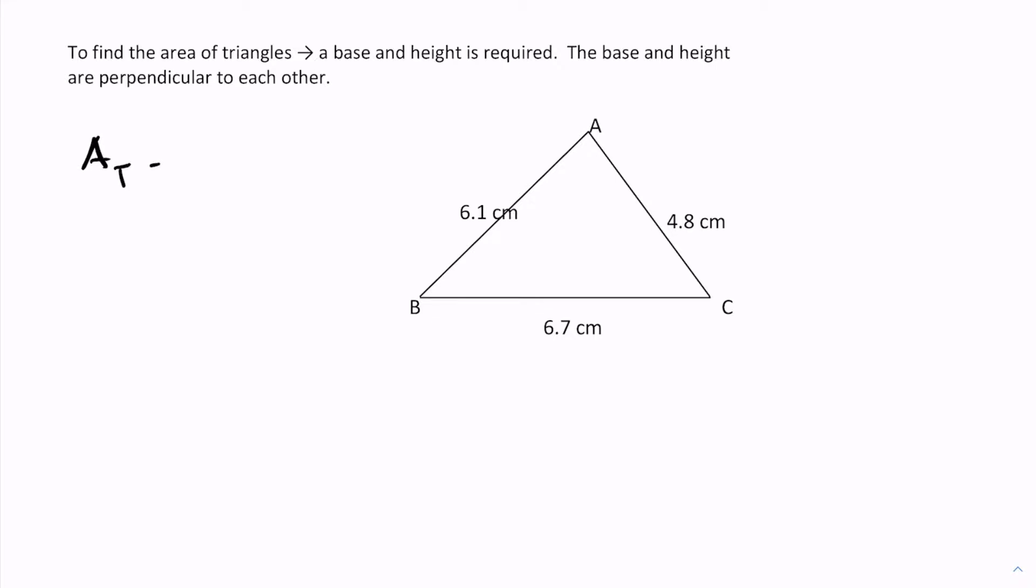So in this case our base is going to be the 6.7 and the height is going to be the perpendicular or the altitude. It's going to be this guy here that drops from angle A to the bottom at 90 degrees.